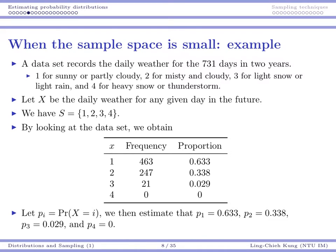Let's use one example to illustrate how to do estimation when the sample space is small. We have a dataset containing daily weather for 731 days over two years, related to bike rentals. For each day we have bike rentals and attributes like weather, labeled as 1, 2, 3, and 4 for sunny, misty or cloudy, light snow or rain, and heavy snow or thunderstorms.